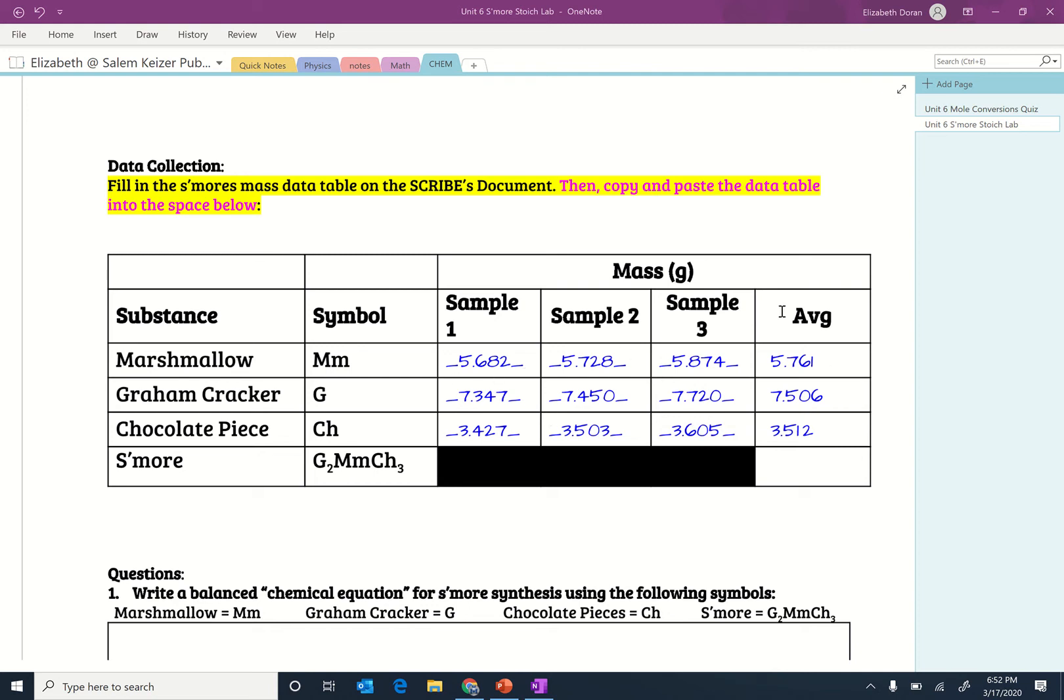So the first thing that you need is your data from the lab and you took the mass of a marshmallow, three different marshmallows, and then you should have averaged it. So average is simple, just add up the three masses that you got from the different marshmallows, divide by three and that's your average mass of a marshmallow unit.